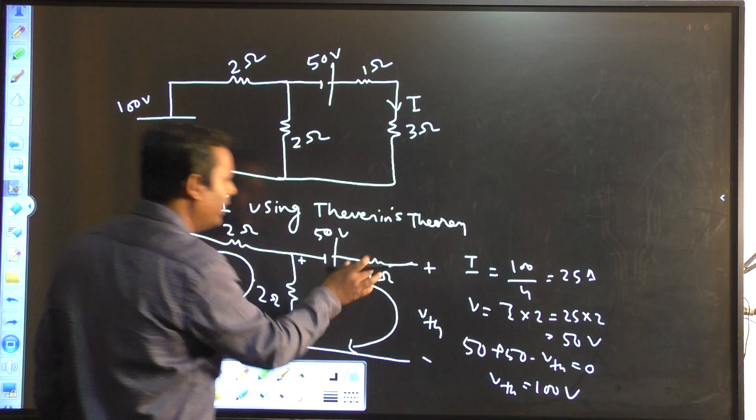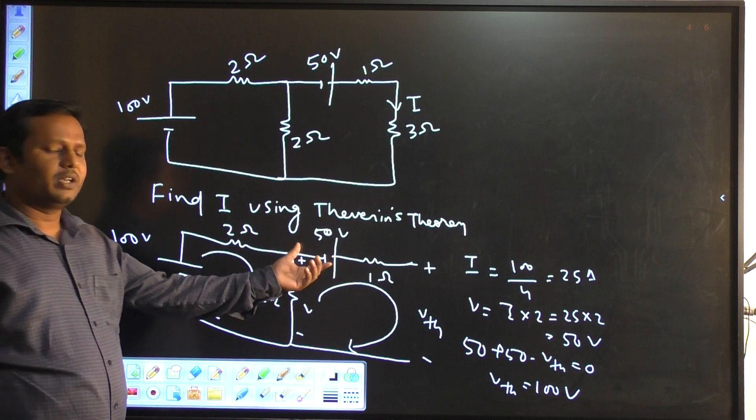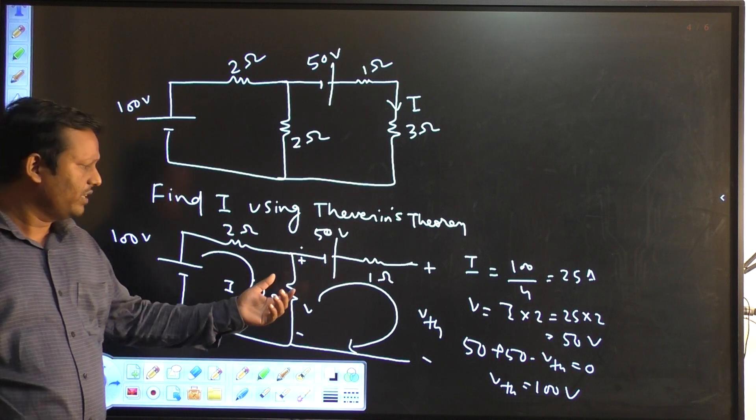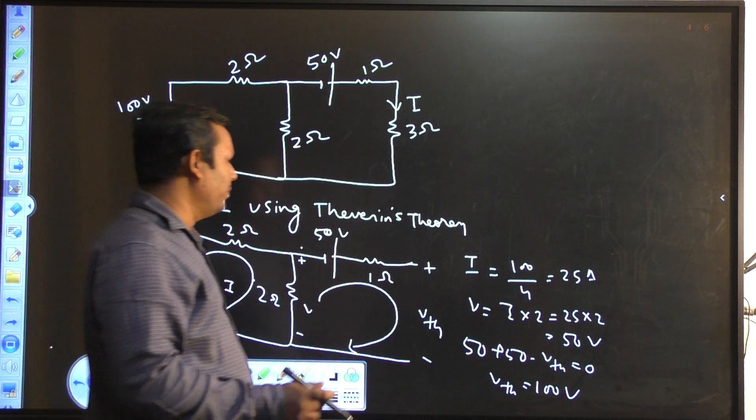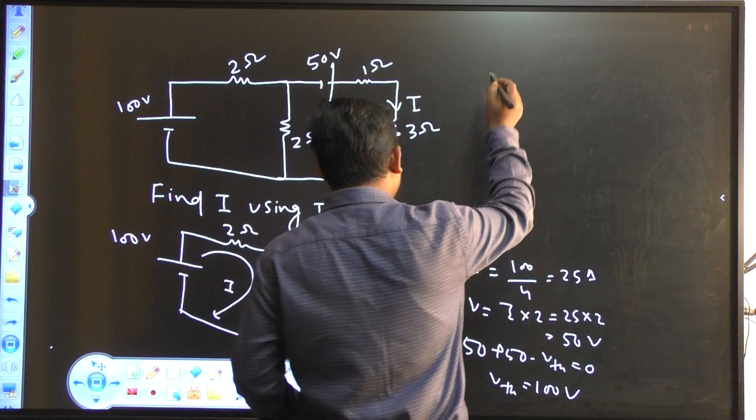Then I have to apply KVL in this loop. In this loop I apply KVL because no current is flowing — this is open circuit so no current will be flowing through this, so there is no drop across the 1 ohm resistor, but your 50 volt is present here. So applying KVL in this loop: 50 plus 50 minus Vth equals 0. So your Vth will be 100 volt.